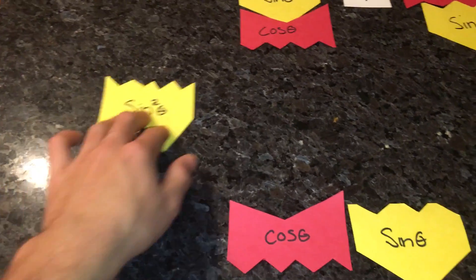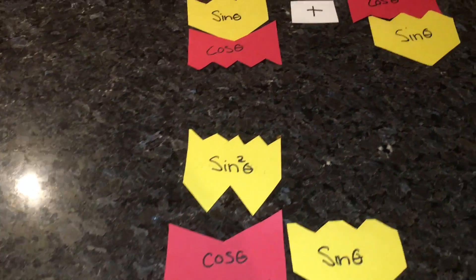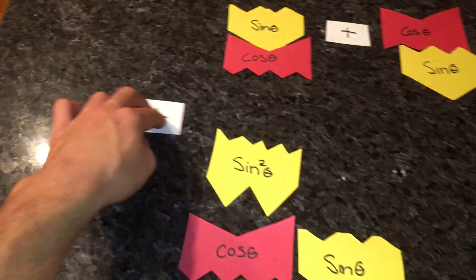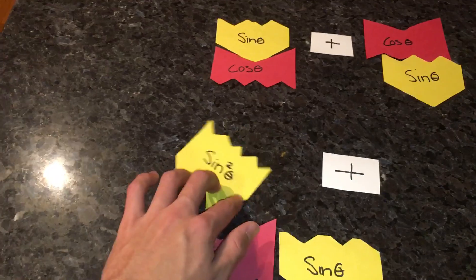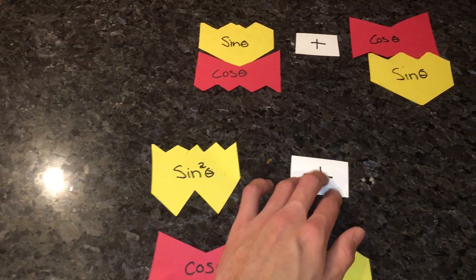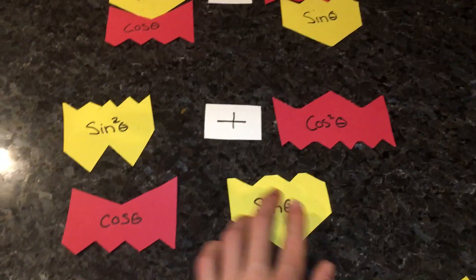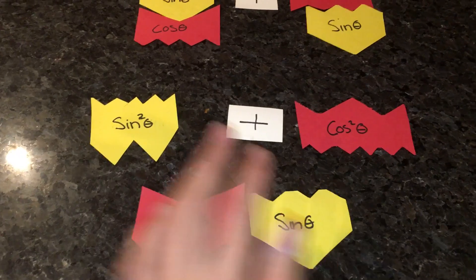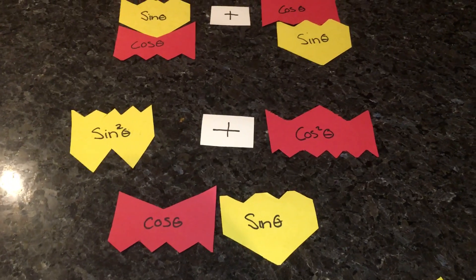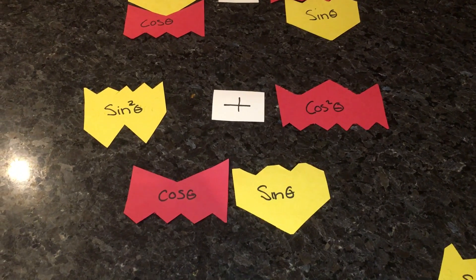creating sine squared, plus cosine times cosine, making cosine squared. So we have sine squared plus cosine squared all over cosine theta sine theta.